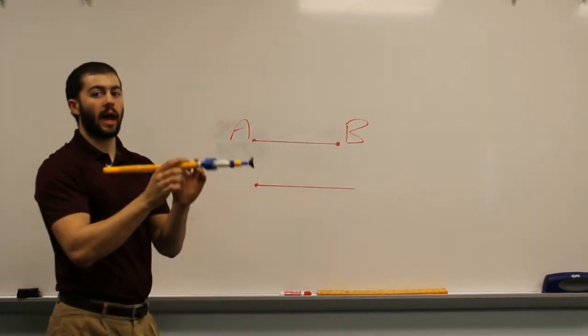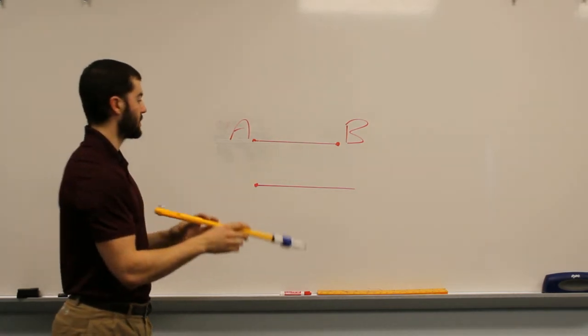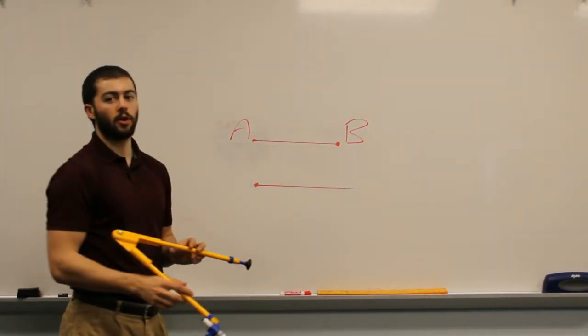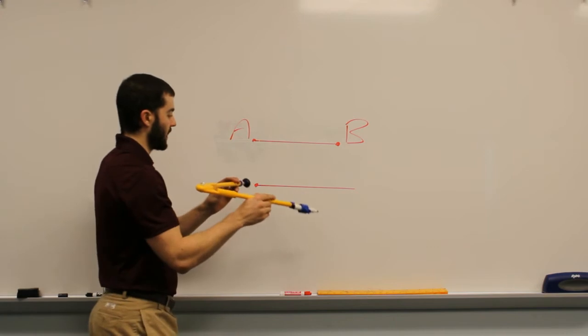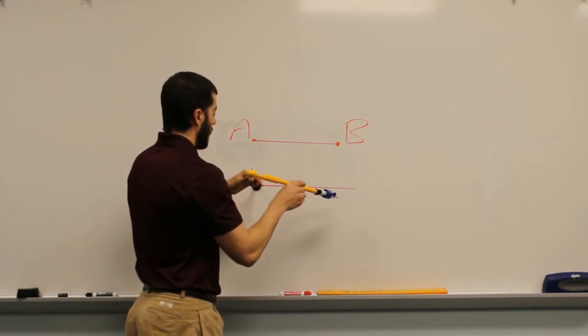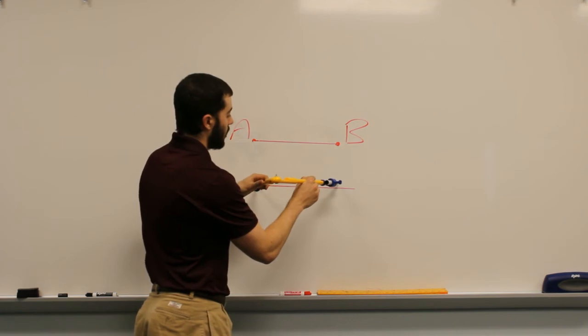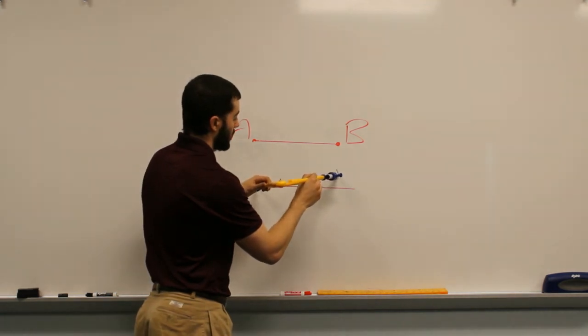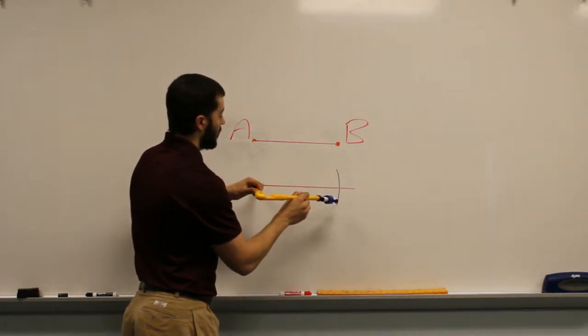And then we keep our compass at this width and use this as a measuring tool for our new ray. So we put the fixed point of the compass on the point of this ray and then all we have to do from there is make an arc along the new ray.